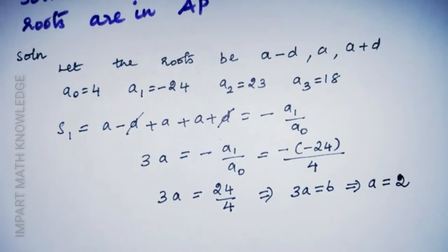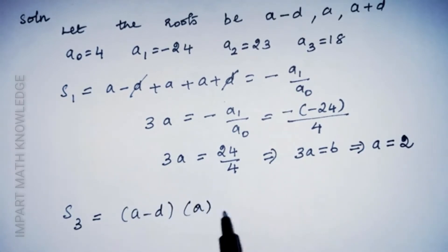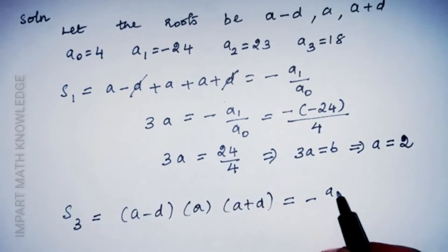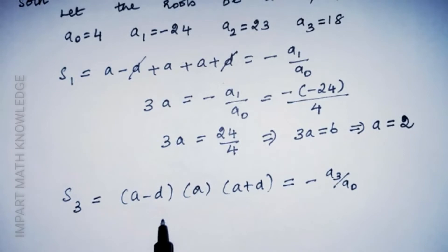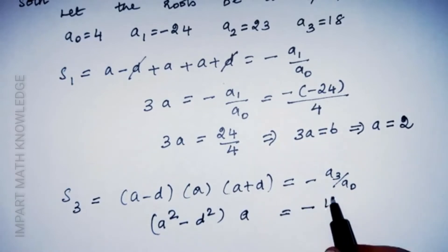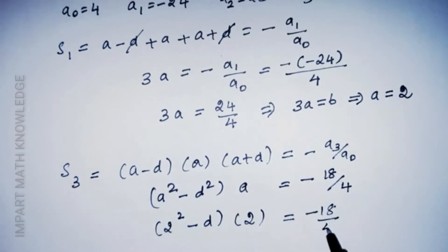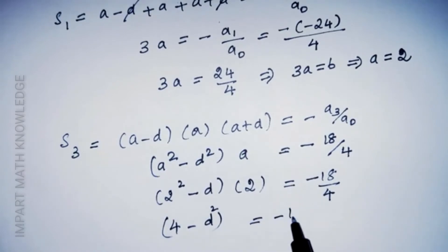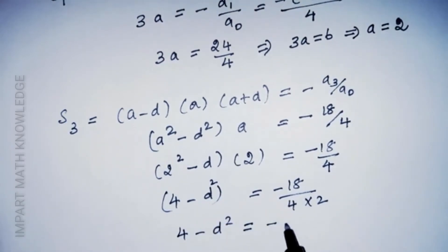To find d, we use the product of the roots. s3: (a-d)·a·(a+d) = -a₃/a₀. Since (a-d)(a+d) = a²-d², we have (a²-d²)·a = -a₃/a₀. With a₃ = 18 and a₀ = 4, and substituting a = 2: (4 - d²)·2 = -18/4, giving 4 - d² = -9/4.